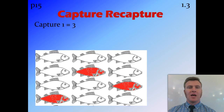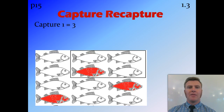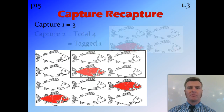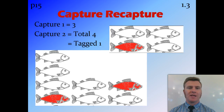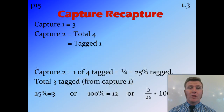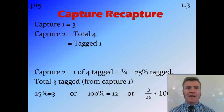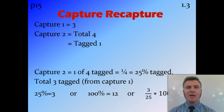I'll then release these fish back into the natural population, and allow them time to mingle with the population and move around. I then catch another group of fish — this time I've put my net in and caught four fish. I'm going to look at my second capture and work out what proportion of those have been tagged from my previous capture. Of my four fish, one of those was a member of the previous capture.